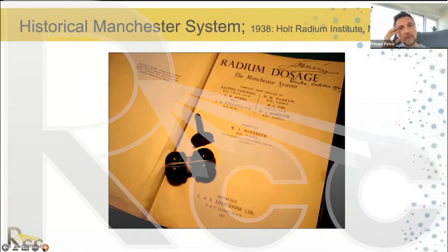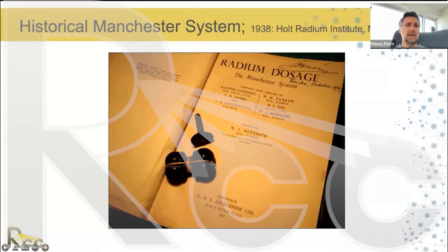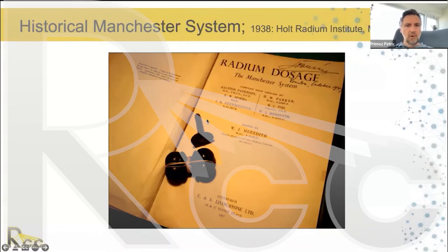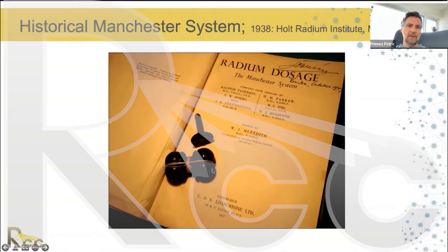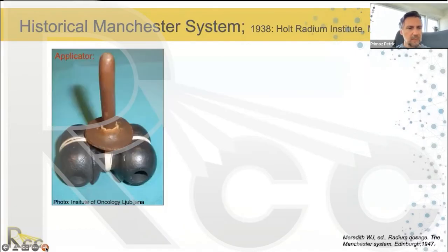Later, in the 1930s and 1940s in Manchester, England at the Holt Radium Institute, the Manchester system was invented. This is probably the most historically important system nowadays. A book from 1947 describes it, along with a historical Manchester applicator consisting of a pair of ovoids and a rubber tandem inserted into the uterus. The flange is a very important part, preventing the intrauterine tube from sliding inside the uterus. These tubes came at three lengths — 6, 4, and 3.5 centimeters — and vaginal ovoids came in large, medium, and small sizes.